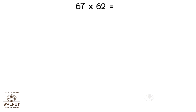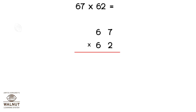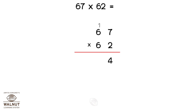Let's try one more. We write the numbers properly one below the other. 67 into 62. 2 into 7 is 14. We write 1 on top of the next number and 4 below the line. Then we do 2 into 6 — that is 12.